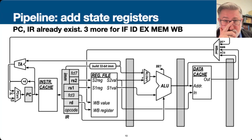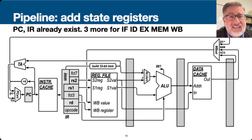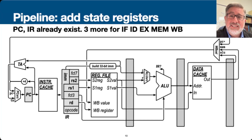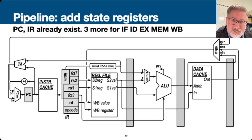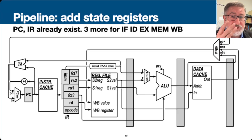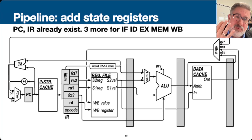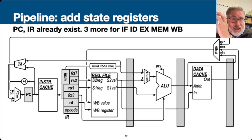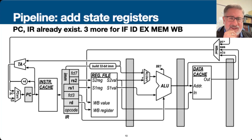Now the question is: what's in those registers? One big complication of pipelining is that if I'm doing execute at this stage in the pipeline, some other instruction is being fetched and another is being decoded. So this register has to hold everything — the opcode, the function code, the data extracted from the register file, and information about where everything's going. We've got to take that information from the instruction register and follow it along in our pipeline one step at a time.